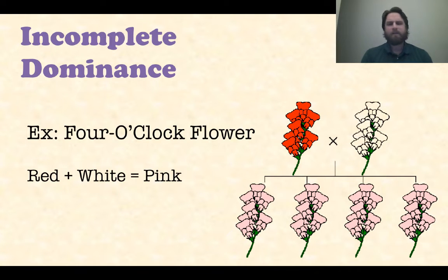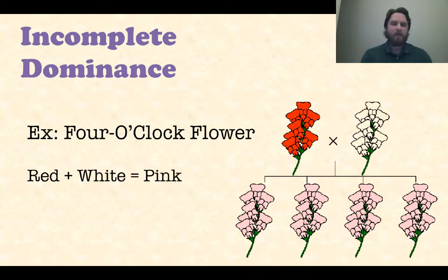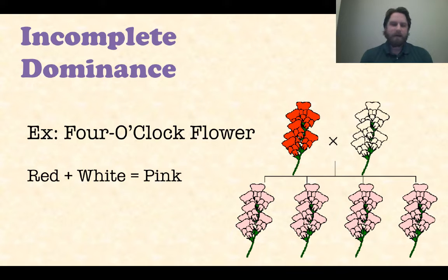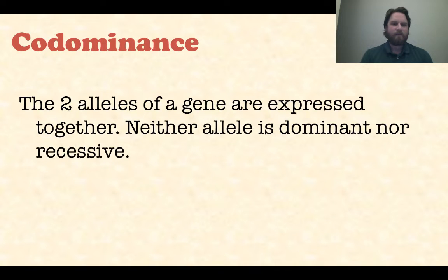Another example is the four o'clock flower — the exact same idea. You have a red flower and a white flower, and when you put them together, what do you get? You get pink. Red plus white equals pink, very much the same with crayons as well. So that is an example of incomplete dominance, as is the betta fish.